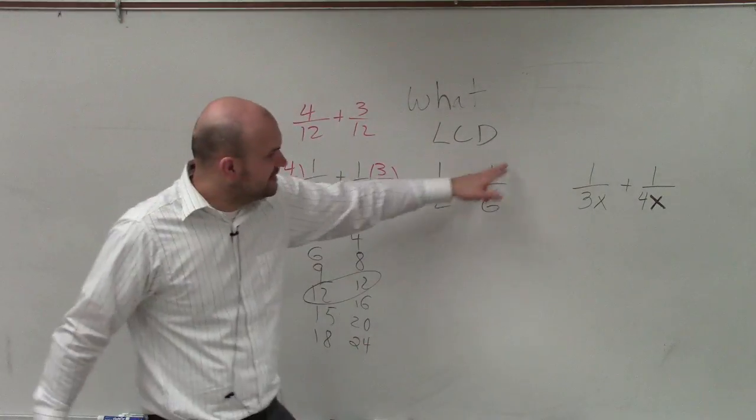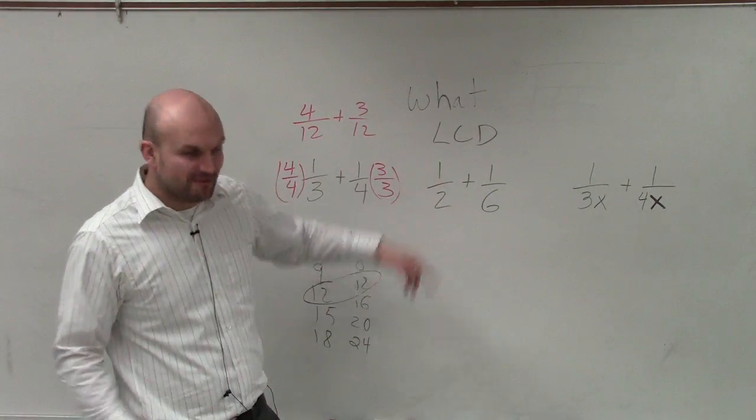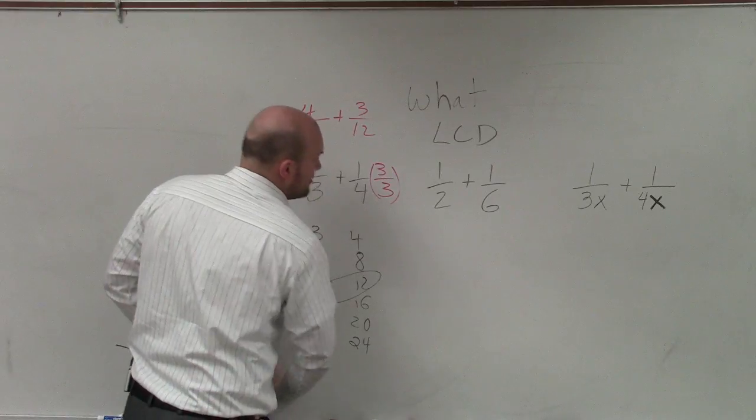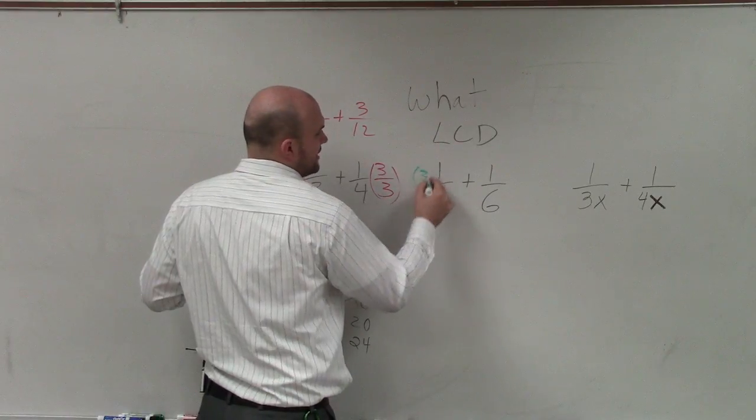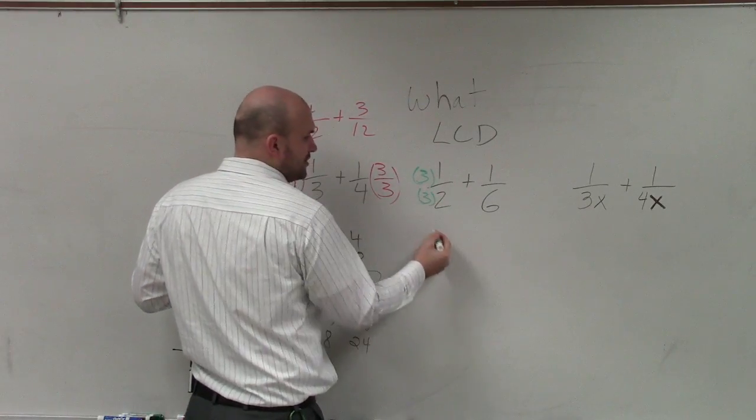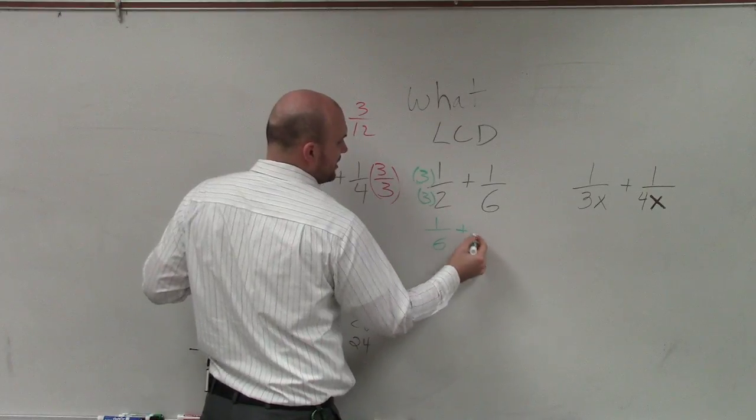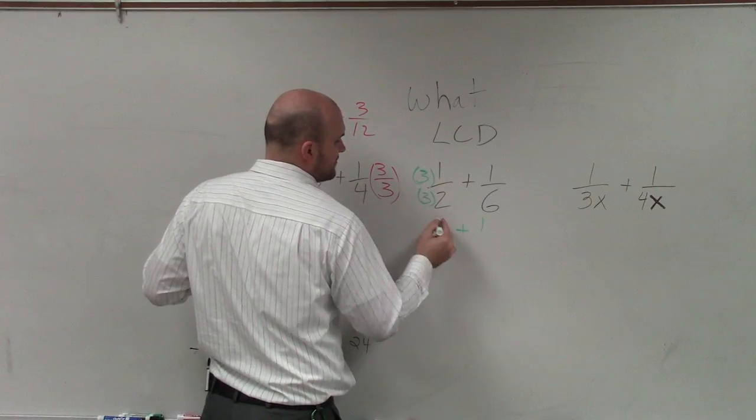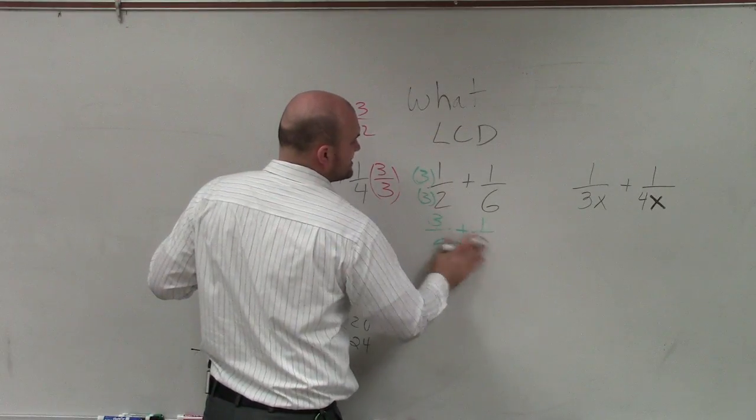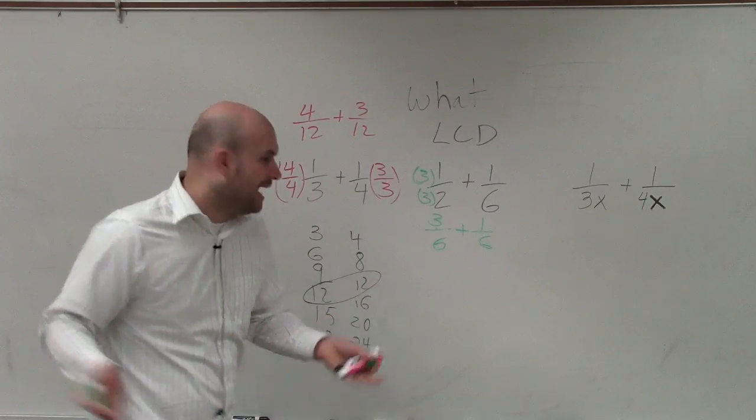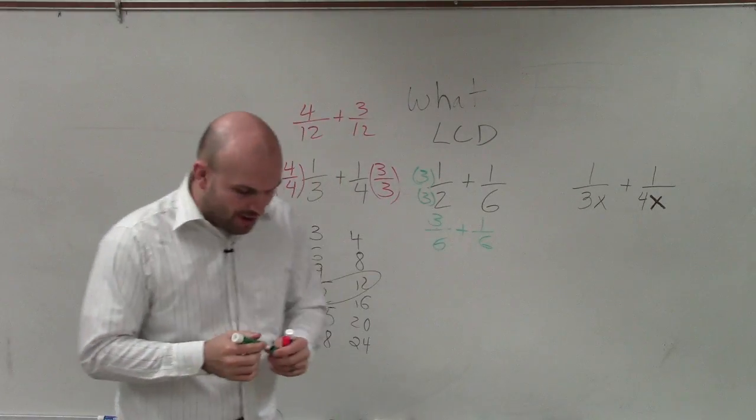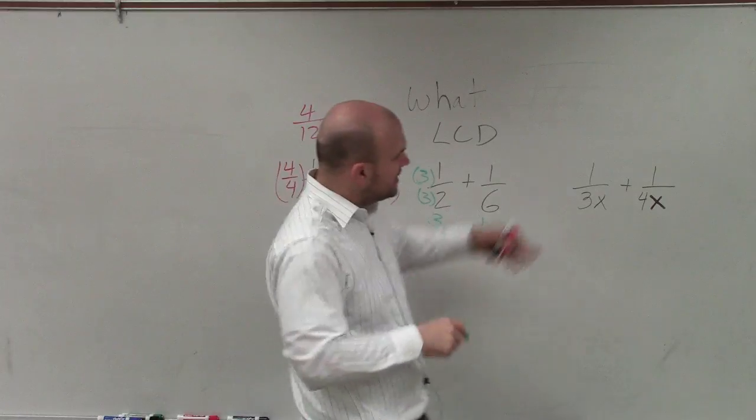So instead of multiplying this fraction by two over two and this one by four over four, I can simply just multiply this left side by three over three, producing an equation of three sixths plus one sixth, which now I can go ahead and combine. I bring this kind of review because now as we get into finding the LCD of polynomials it's kind of like the exact same thing.